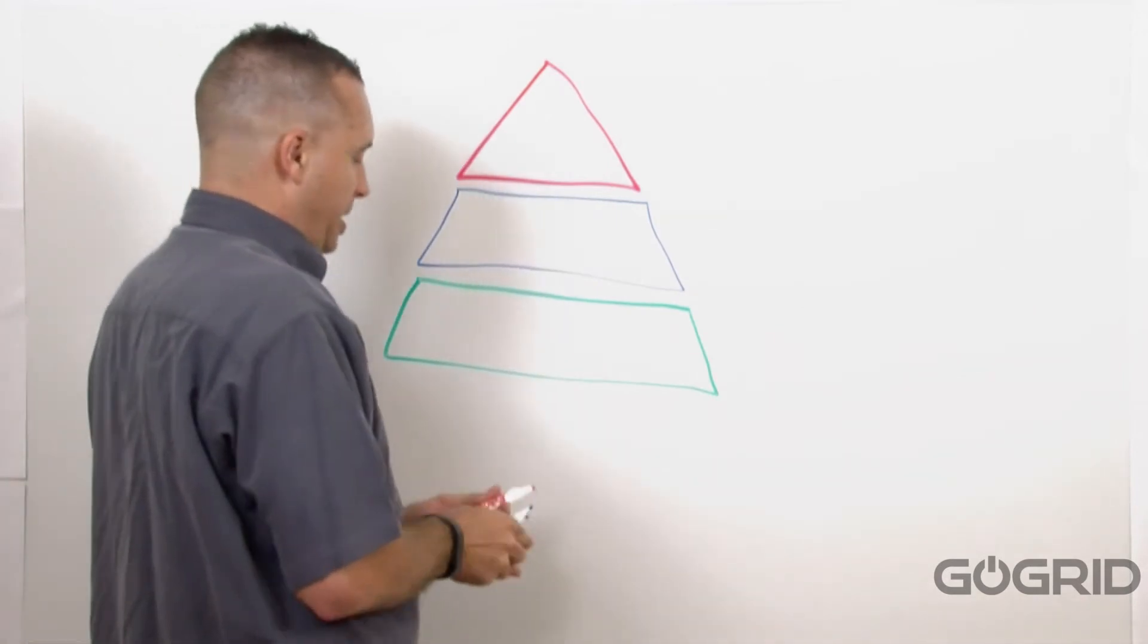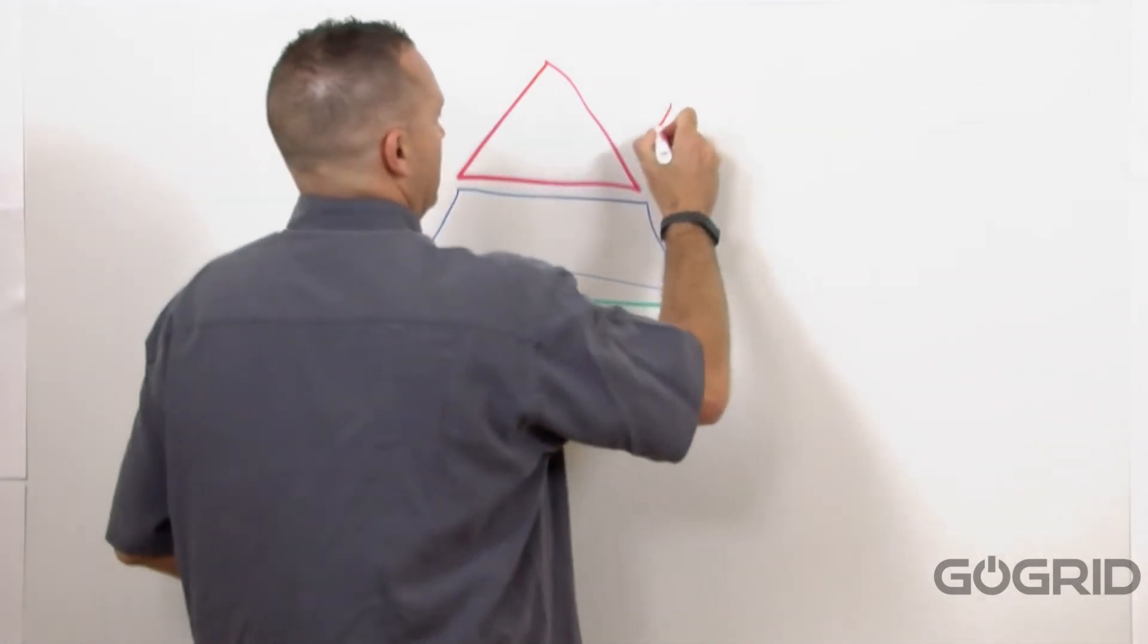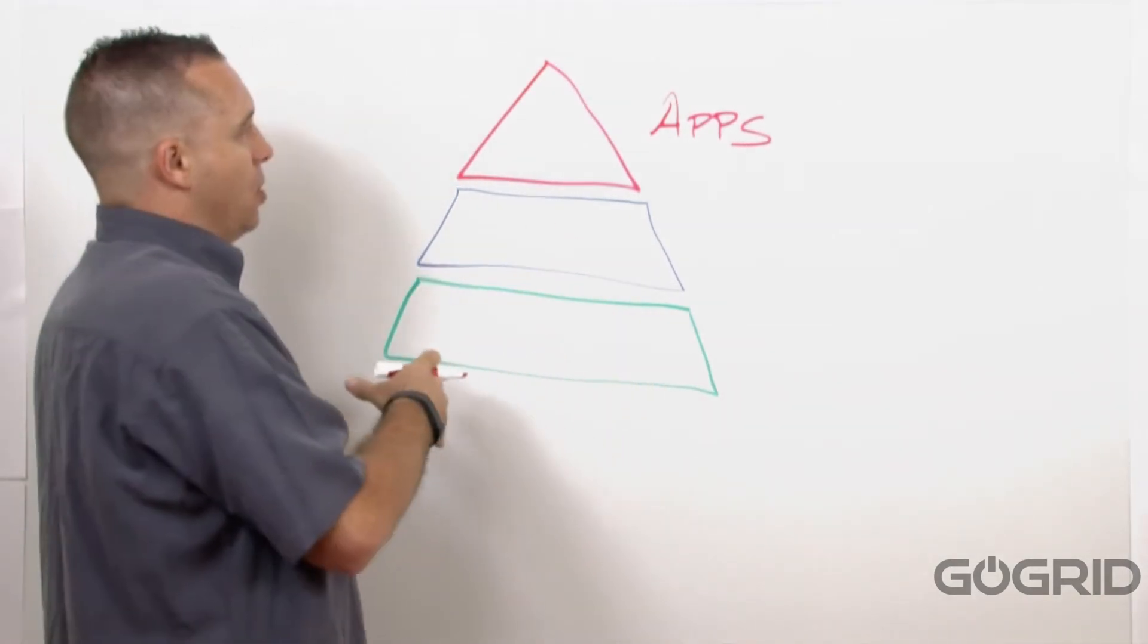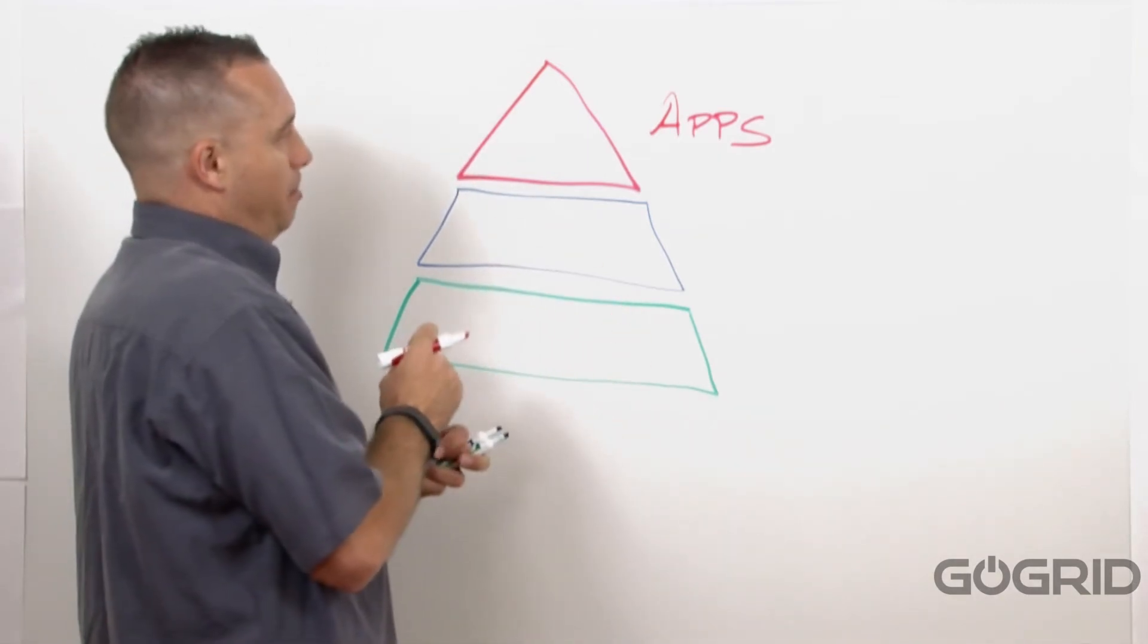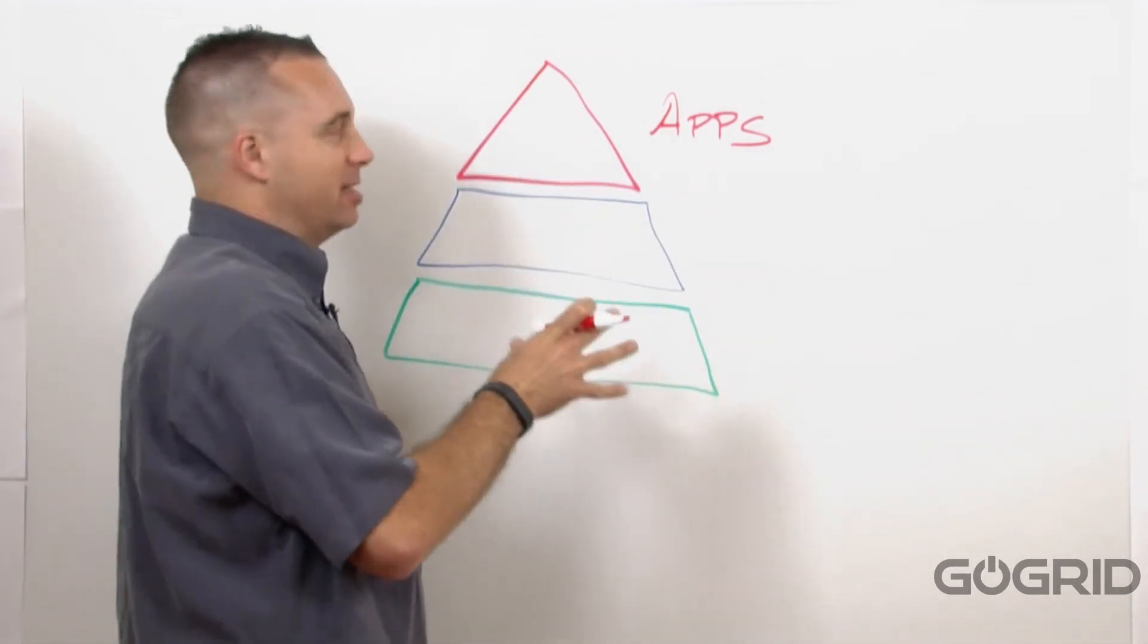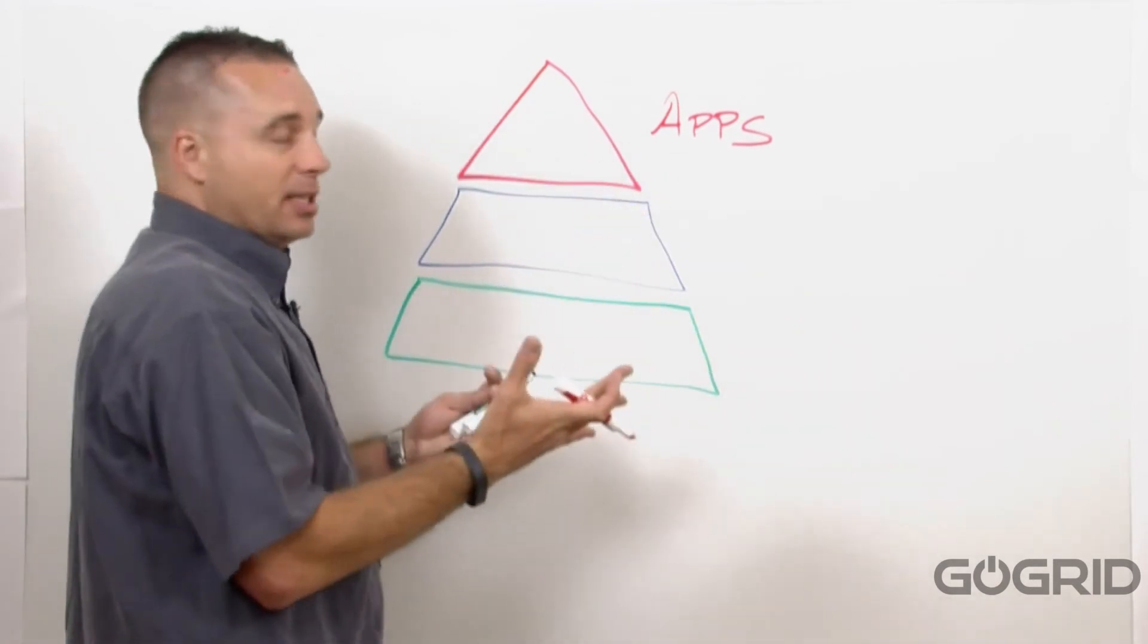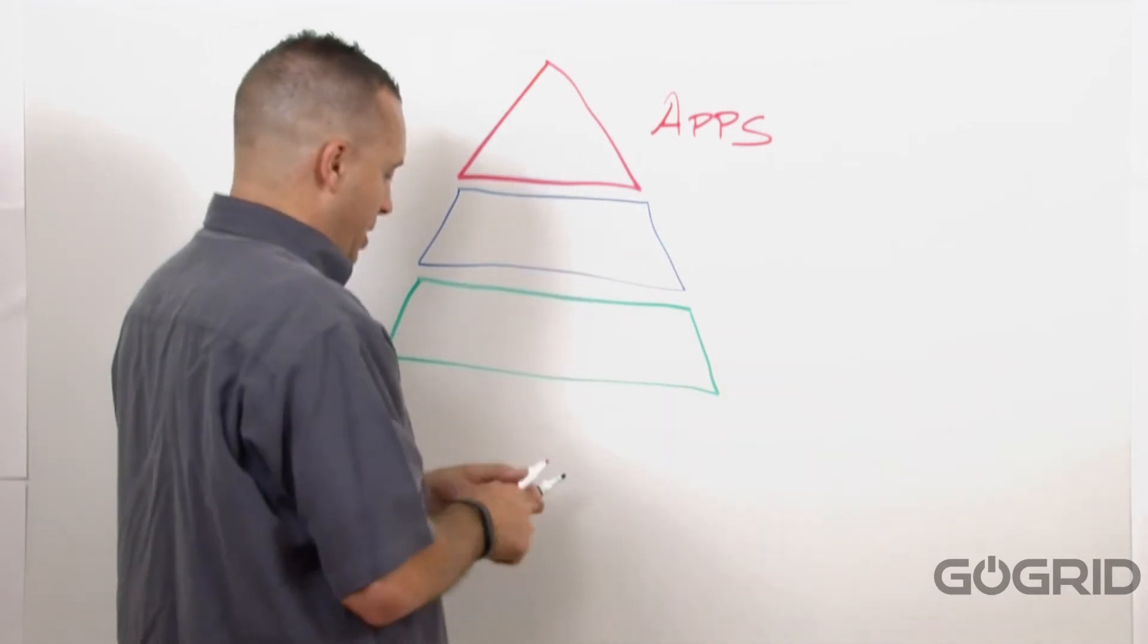I'm going to start at the top here. This is what we call the cloud application layer. At this layer, this is where you find things like photo sharing sites, or something like Salesforce, or Facebook, that sort of thing. This is essentially access to applications that are delivered via the internet. You're given some control at this layer, but not as much. It's basically like using desktop software, but actually accessed through the internet, through a web browser.